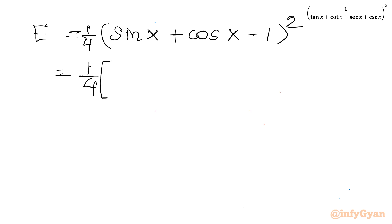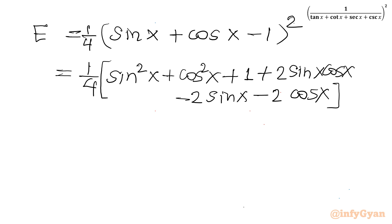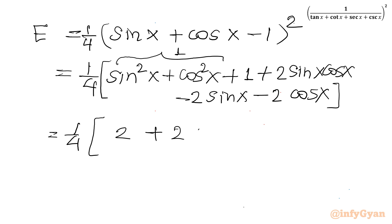Expanding: (1/4) · [sin² x + cos² x + 1 + 2 sin x cos x − 2 sin x − 2 cos x]. Since sin² x + cos² x = 1, we get 1 + 1 = 2. So this becomes (1/4) · [2 + 2 sin x cos x − 2 sin x − 2 cos x].